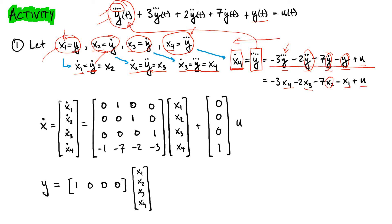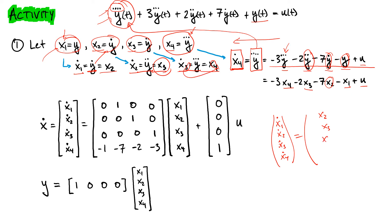Now we aggregate this together. It may be useful to first write the vector form without matrix form: X1 dot equals X2, X2 dot equals X3, X3 dot equals X4, and X4 dot equals minus X1 minus 7X2 minus 2X3 minus 3X4 plus U. This gives us our set of coupled first-order differential equations.